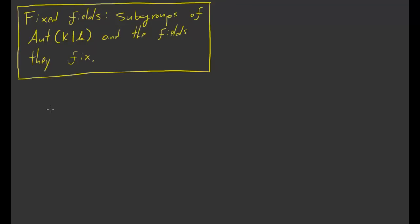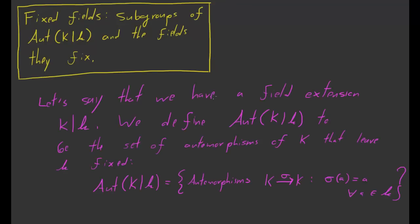In the previous videos, we defined automorphism groups, and here's how we did it. We said, let's suppose we have some field extension K over k. Given such a field extension, we're going to associate the set of automorphisms of K which fix k to it.